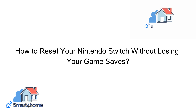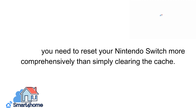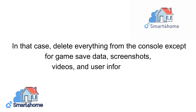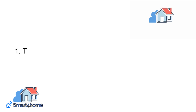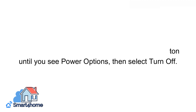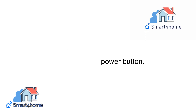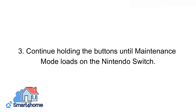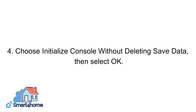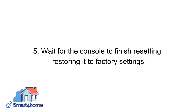How to reset your Nintendo Switch without losing your game saves. Suppose you need to reset your Nintendo Switch more comprehensively than simply clearing the cache. In that case, delete everything from the console except for game save data, screenshots, videos, and user information. 1. Turn off the console — hold down the Power button until you see Power Options, then select Turn Off. 2. Hold down the Volume Up and Volume Down buttons, then press the Power button. 3. Continue holding the buttons until Maintenance Mode loads on the Nintendo Switch. 4. Choose Initialize Console without deleting saved data, then select OK. 5. Wait for the console to finish resetting, restoring it to factory settings.